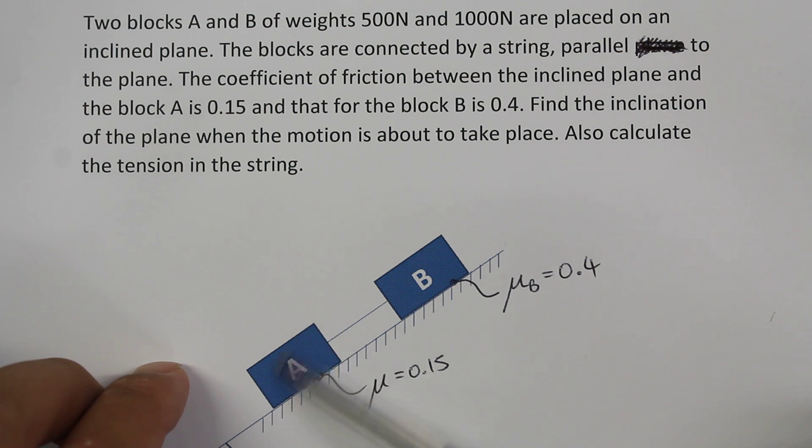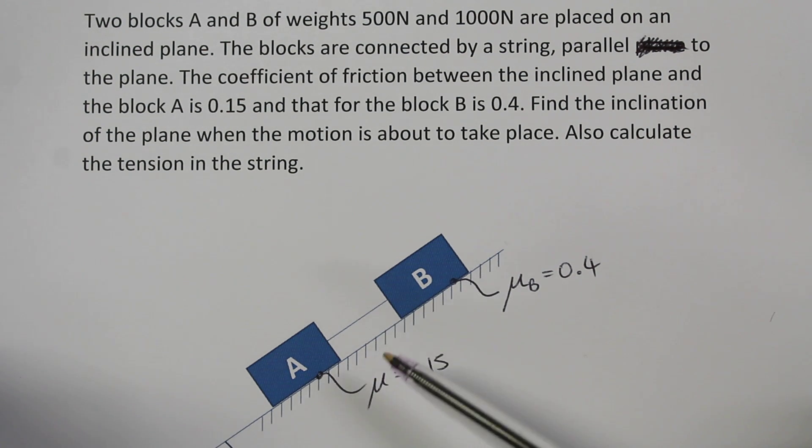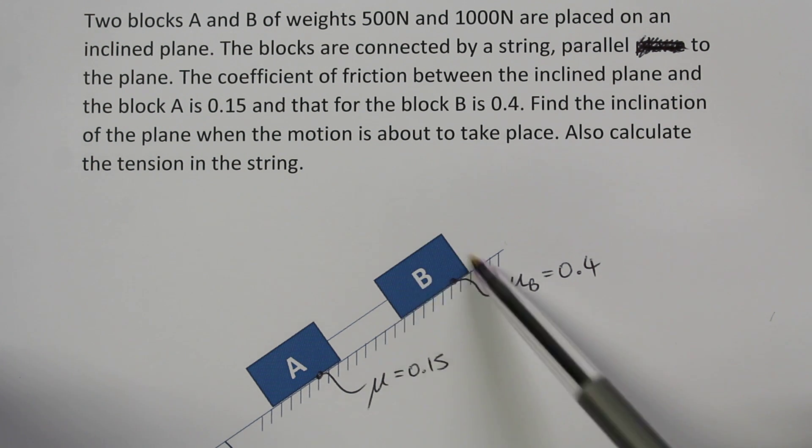Initially we'll see object A starting to slide down the incline, and the thing that stops it from sliding down the incline will be the tension inside the string. So we could draw a free body diagram where we've got the tension in the string holding block A from sliding down the incline. We know that block A is going to slide first because it's got a lower coefficient of friction compared to block B.